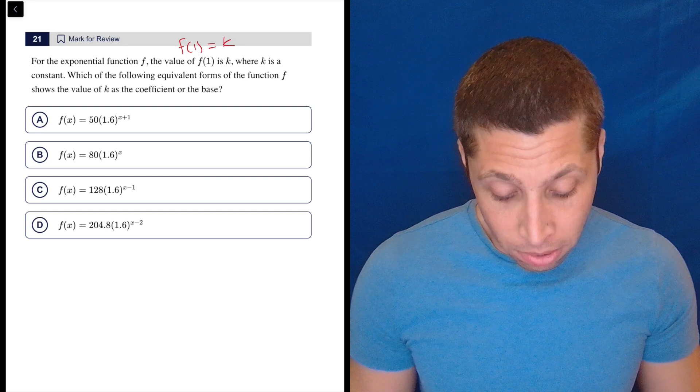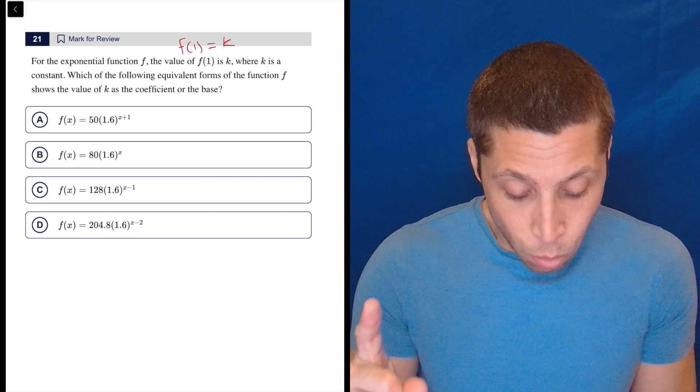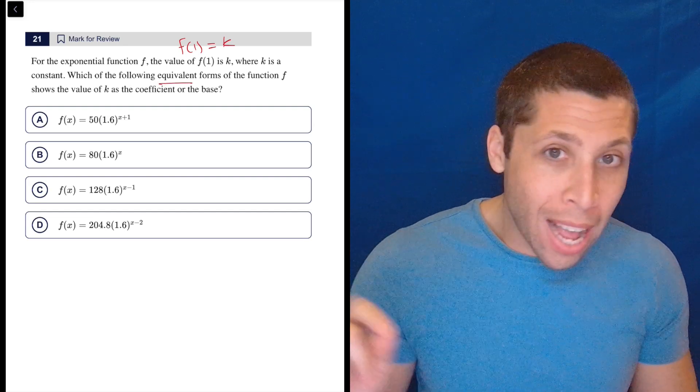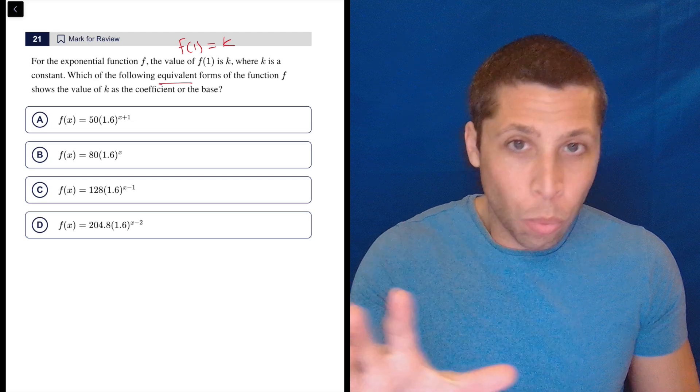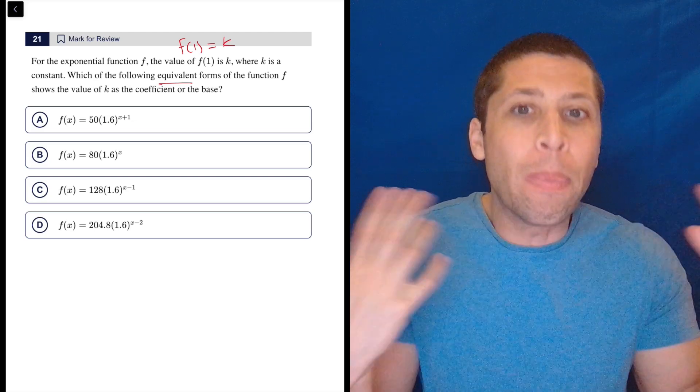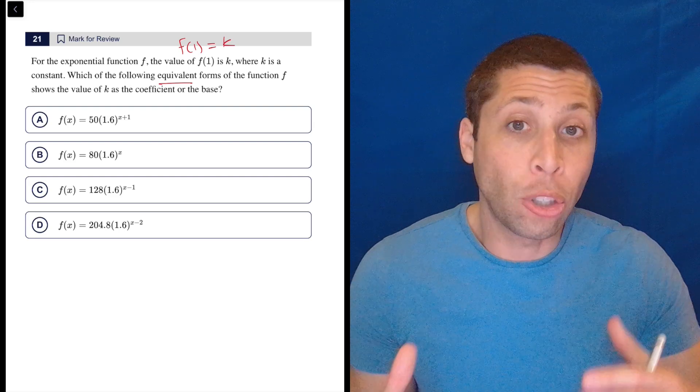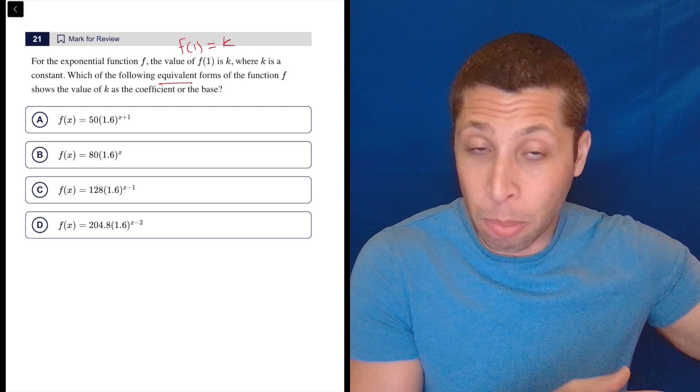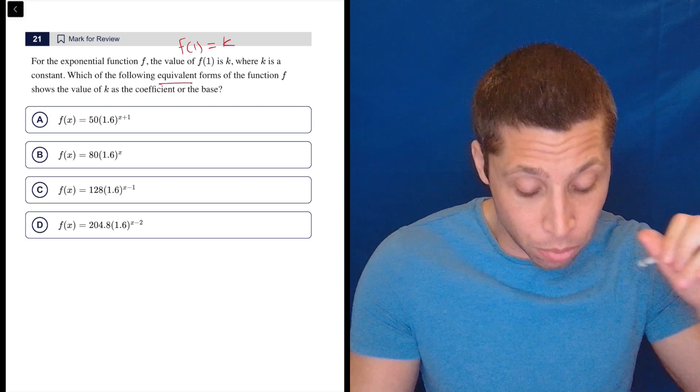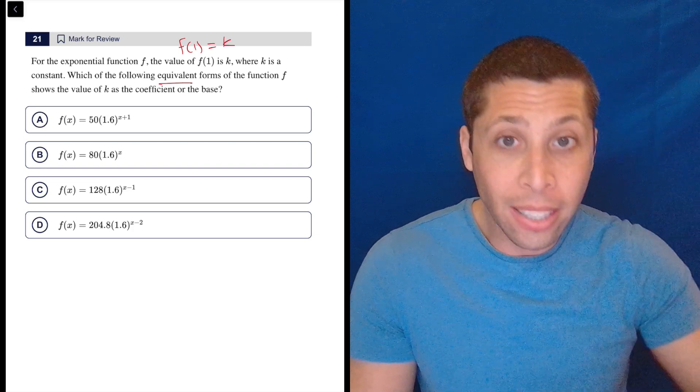Which of the following equivalent forms of the function f, meaning we don't need to do any algebra here to see which one is, we don't need to build this equation. All of these are equivalent, meaning they all would give us the same value. They would show up the same on Desmos if we graphed them, so we're not going to bother to do that, but they're telling us their equivalent.